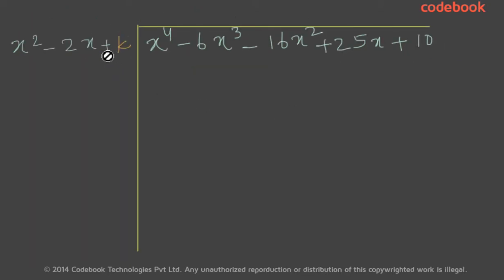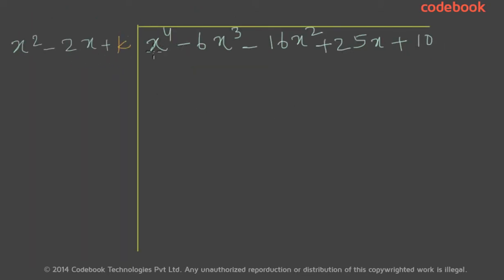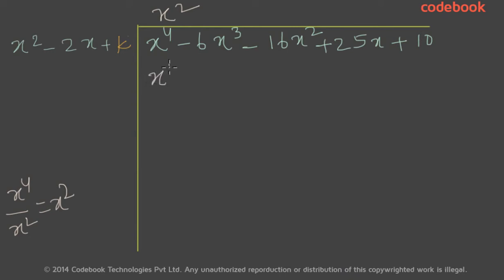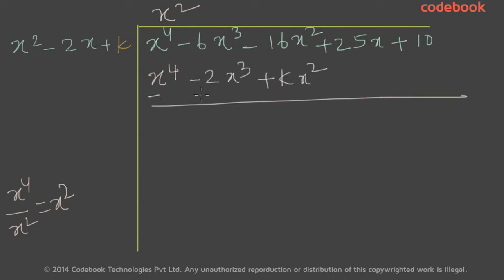Now let's work on step 2. Step 2 states that we divide the first term of the dividend with the first term of the divisor. When you divide x to the power 4 by x squared, you will end up with x squared. So that is the first term of your quotient. Now let's multiply this term with the terms of the divisor, giving x to the power 4 minus 2x cubed plus kx squared.